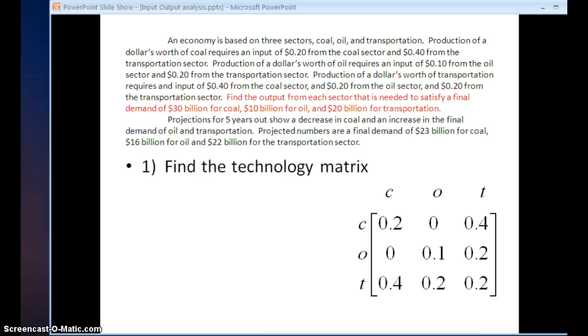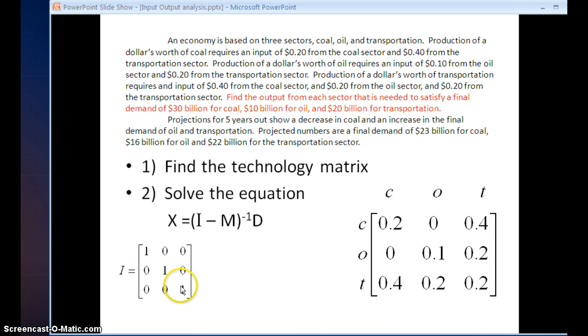Now as I move to the next sentence, it asks me to find the output from each sector to satisfy the final demand. And so I'm going to use this equation. In this equation, X is the final demand. And you see the equation is already solved for X. So if I just fill in the remaining matrices, I will get the answer matrix X, the output. So my first matrix that I need is the identity matrix. Because my technology matrix is 3x3, I need to use a 3x3 identity matrix. So I will be the matrix with 1s on the main diagonals and 0s elsewhere that serves as the identity matrix.